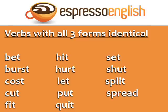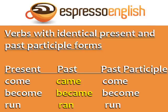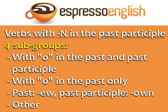The next group is verbs with identical present and past participle forms. The only different form is the past. Come, came, come. Become, became, become. Run, ran, run. A number of irregular verbs have N in the past participle.